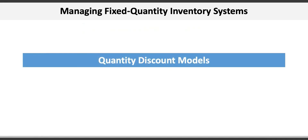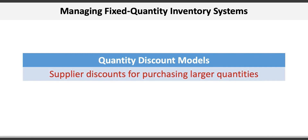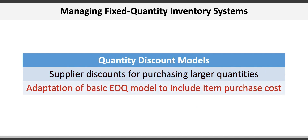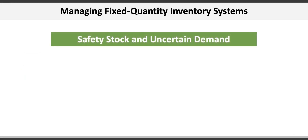Many suppliers offer discounts for purchasing larger quantities of goods or services. This often occurs because of economies of scale, shipping larger loads, not having to break apart boxes, or simply as an incentive to increase total revenue. The EOQ model can be adapted to allow for quantity discounts by including the purchase cost of the item into the equation.